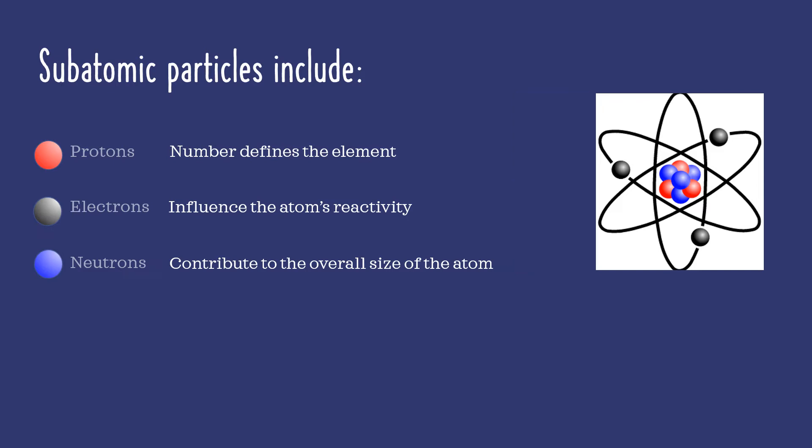Protons and neutrons are big and hang out together in the core of the atom called the nucleus. Electrons are relatively tiny, so small in fact that they don't have any measurable mass at all. And they bumble around within an area outside of the nucleus called the electron cloud.